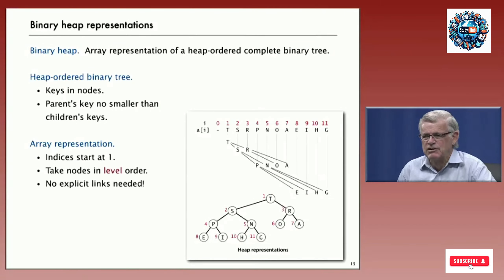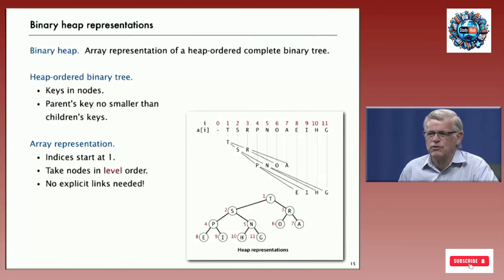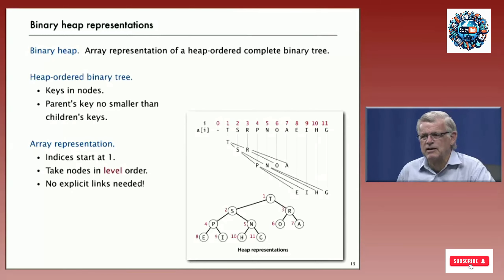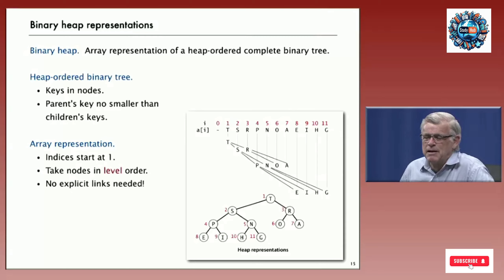For the array representation, we start with indices at 1 — it's a little less calculation that way. We leave A[0] empty, and then we just take the nodes in level order: first we put the root, then the two nodes on the first level going left to right, then all the nodes on the third level left to right, and so forth. This is interesting because we can draw the tree to get more intuition, but in the actual data structure representation we don't need any links at all — it's just an array.